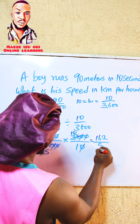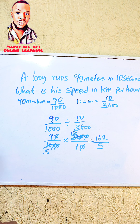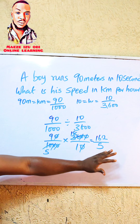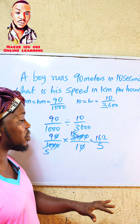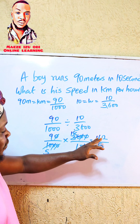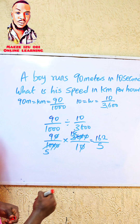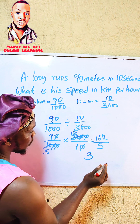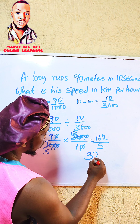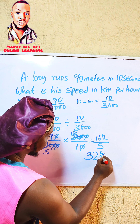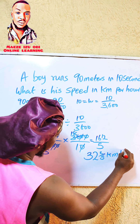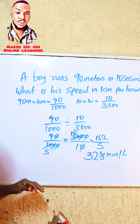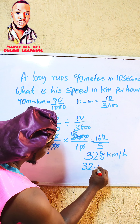Now when we have a division sign like this, the second fraction inverts itself. So it becomes 90 over 1000 times 3600 over 10. We then simplify: dividing gives us factors that reduce the expression step by step.